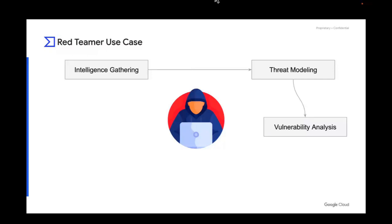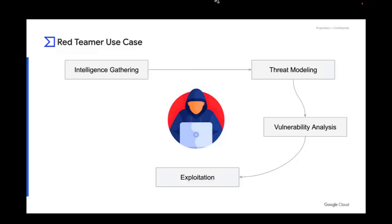It's worth mentioning that many pen testers or red teamers, when doing their exercises, forget about threat modeling. They go straight from gathering intelligence of their objective to analyzing vulnerabilities. But we have to remember that a red team exercise is not about humiliating the blue team or showing how good a hacker you are, but instead it's about actually simulating an actual threat or menace to our organization. Moving from vulnerability analysis, we go to exploitation, and then to post-exploitation where the pen tester or red teamer establishes a foothold in the system or network, moves laterally, or exfiltrates data.